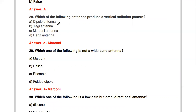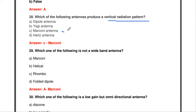Which of the following antennas produces a vertical radiation pattern? Options are dipole, Yagi, Marconi, and Hertz antennas. The Marconi antenna produces a vertical radiation pattern.